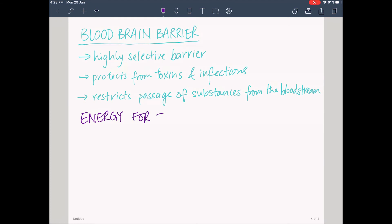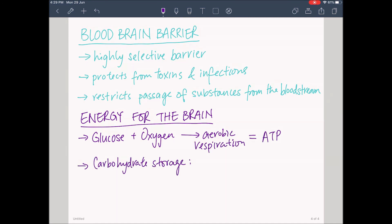Energy for the brain. Glucose and oxygen is used for aerobic respiration to make ATP inside the brain. The brain is the organ that has limited carbohydrate storage, so the supply of glucose must be continuous.